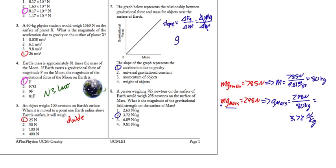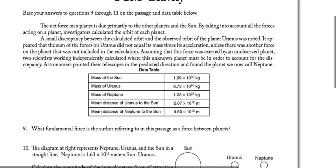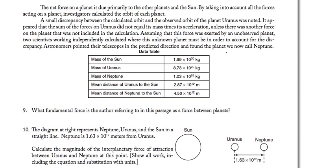Alright, let's move on to the next page. Here we have a passage, I'll give you a second to read it here. The net force on a planet is due primarily to the other planets and the Sun. Now they talk about a discrepancy between the calculated orbit and the observed orbit, and then they give you a bunch of data here. And then we're asked to answer a couple questions.